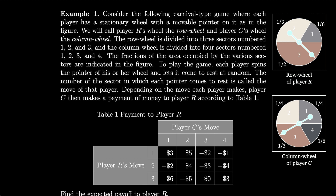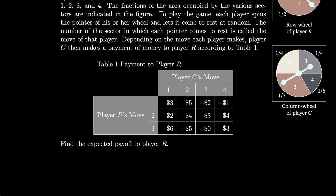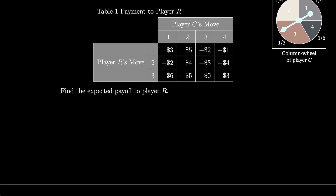Depending on the move each player makes, player C then makes a payment of money to player R according to table 1. Player R makes move 1, 2, or 3, and depending on player C's move, player C ends up paying player R some money. In the case that the payoff is negative, player R pays player C. Let's find the expected payoff to player R.